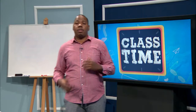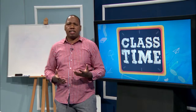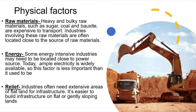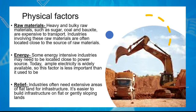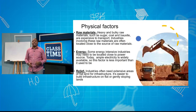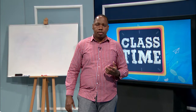Relief is also a very important factor. Industries often need extensive areas of land. Industrial areas tend to be located in very flat areas, especially when they are in or on the fringes of an urban space. Most industries tend to avoid hilly areas unless the raw material they're extracting is located in that hilly area. Relief therefore plays quite a significant role in industrial location.